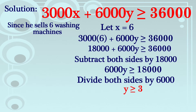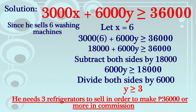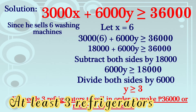So kapag nakapagbenta si MJ ng 6 washing machines, kailangan lang niyang magbenta ng 3 refrigerators — he needs to sell 3 refrigerators in order to make 36,000 pesos or more in commission. Yan ang sagot natin sa number 2.